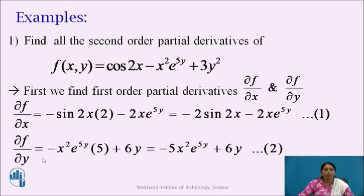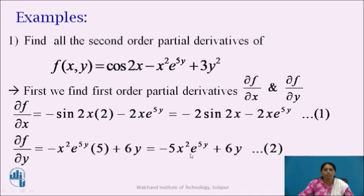Now, ∂f/∂y is obtained by differentiating partially with respect to y, treating x as constant. The derivative of cos(2x) will be 0. For −x²e^(5y), x² is treated as constant, so −x² remains and the derivative of e^(5y) is e^(5y) × 5. Plus the derivative of 3y² is 6y. So we get ∂f/∂y = −5x²e^(5y) + 6y. We call this equation 2.